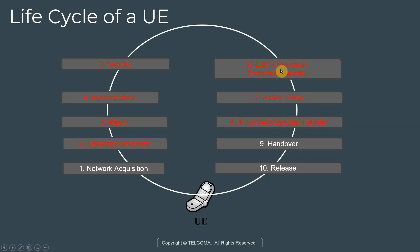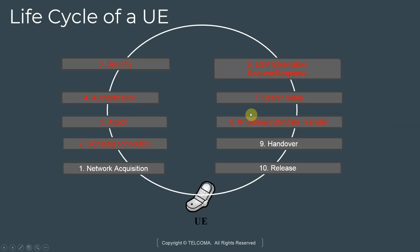If authentication is successful, a security context is set up for the UE, followed by an ESM information request and response, where the network retrieves information it needs from the UE to deliver service. If everything works correctly, we go through bearer setup, where bearers for that subscriber are established in the EPC and E-UTRAN. These bearers can be GBR or non-GBR, each with their own QCI indexes.